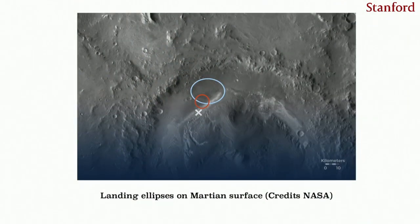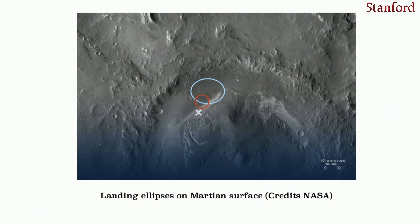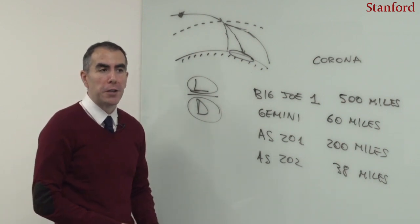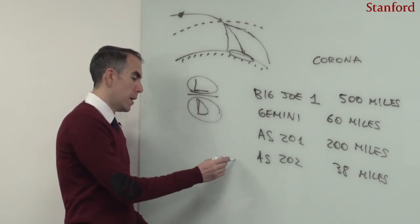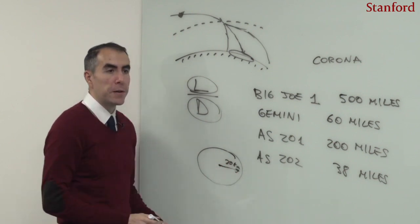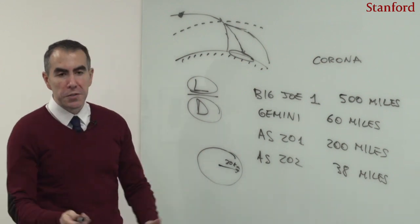Nowadays the problem continues in defense systems and missile development, but also in the space program—specifically in predicting the landing zone on the Martian surface. Landing ellipses on Mars tend to have diameters of the order of 20 kilometers. On Earth, a 20-kilometer error is manageable, but on Mars it is critical because traveling from one place to another requires oxygen and fuel supply.